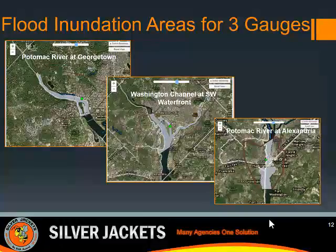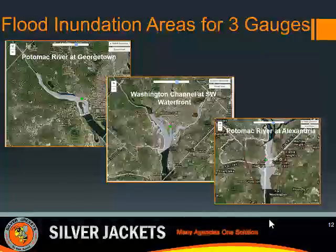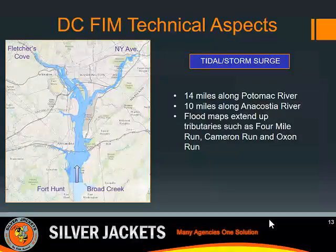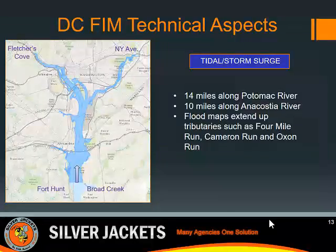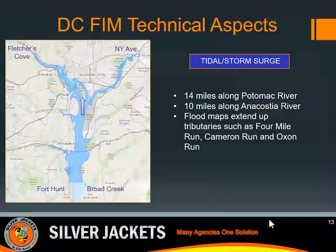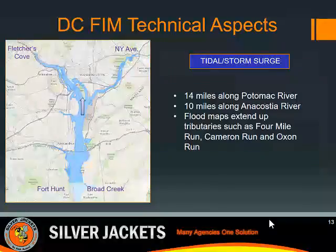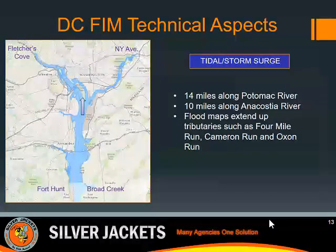There is a set of maps associated with each of the three gauges. You'll need to know which gauge covers your area of interest to go to the correct one online. There are maps for tidal storm surge flooding and for riverine flooding — the tidal maps are for water pushing upstream. The flood inundation maps extend from Fletcher Cove on Canal Road in Northwest DC to the mouth at Broad Creek, approximately 14 miles, and also extend up tributaries such as Four Mile Run, Cameron Run, and Oxen Run. Maps for the Anacostia River extend from New York Avenue in Northeast DC to its confluence with the Potomac River, approximately 10 miles.